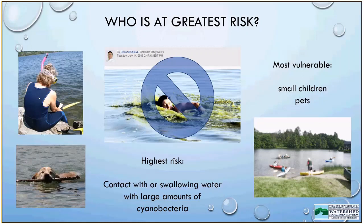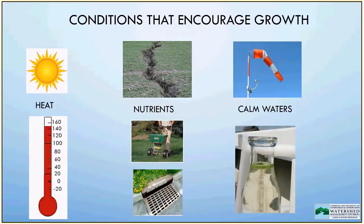Conditions that encourage cyanobacteria growth include heat and nutrients. Here in Vermont, we're most likely to see cyanobacteria blooms — large accumulations that discolor the water or form a scum at the surface — when the water is warmer, typically from mid-July to mid-September. Blooms can occur before or after that window, and there are species that will grow and bloom under the ice, but most commonly we see our blooms in that period, as not many people are recreating during ice conditions.